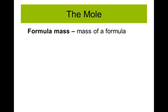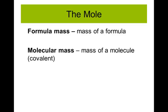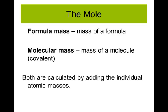We can apply that same concept to a whole compound. A formula mass tells me the mass of a formula, and a molecular mass — sometimes called a molar mass — tells me the mass of a molecule. The difference is that molecular mass is for covalently bonded things, while formula mass is generally for ionic bonded things, but they work the same way. To figure out each one, you just add the individual atomic masses together.